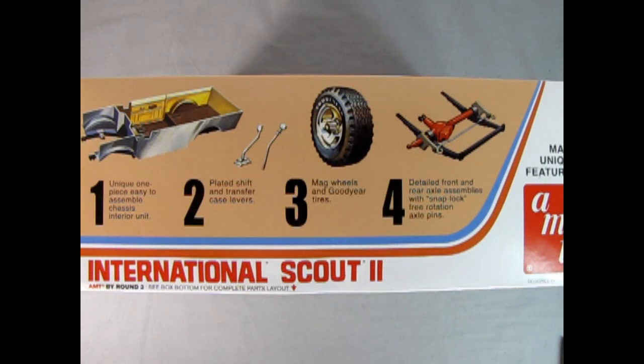Now, there's so many features on this model that we just can't show you all of them at once. So we've got to break it down into multiple steps. So step one, or number one, we have a unique one-piece easy-to-assemble chassis interior unit, which is right here. Two, we have plated shift and transfer case levers, which are right here. Three, mag wheels and Goodyear tires. Oh, my. Number four, detailed front and rear axle assemblies with snap-lock free rotation axle pins.